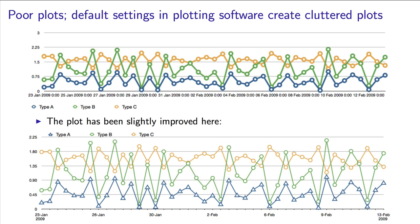Here's another bad time series plot, when we have multiple lines that cross over each other — it makes picking out trends very hard. Pause the video again and determine any trends you notice in this plot. Did you notice the correlation between the blue and green lines? They move up and down together. Did you notice the inverse correlation between the orange line and the others? When the orange line goes up, the others go down.